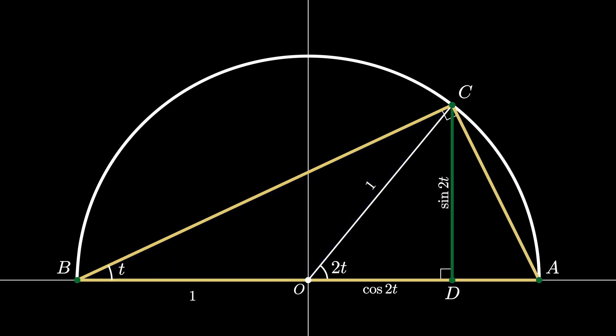Notice that the right triangle ACB has a hypotenuse of length 2 since it consists of 2 radii of the semicircle. The leg opposite to angle t in this triangle therefore has a length 2 times the sine of t and the leg adjacent to the angle t has a length 2 times the cosine of t.